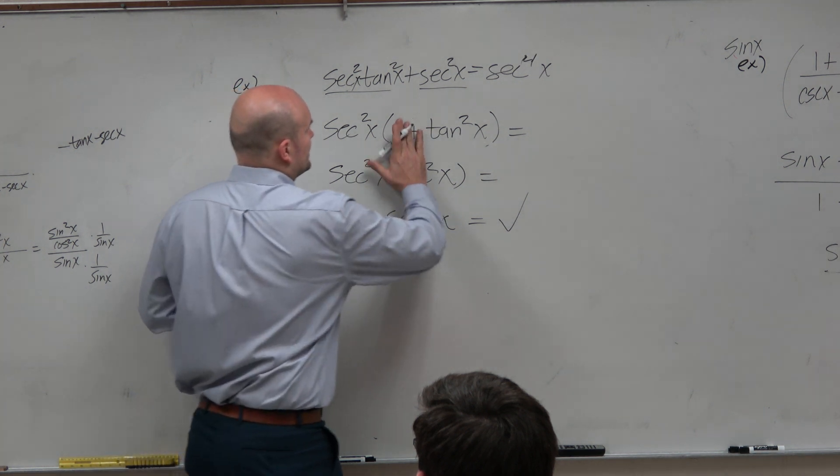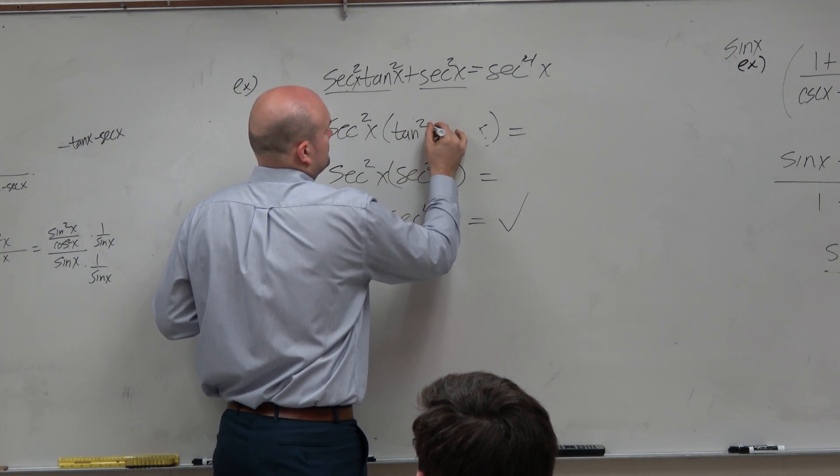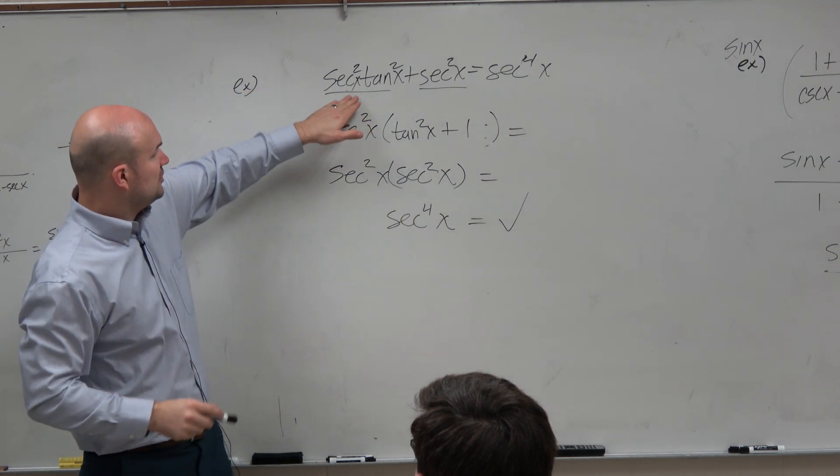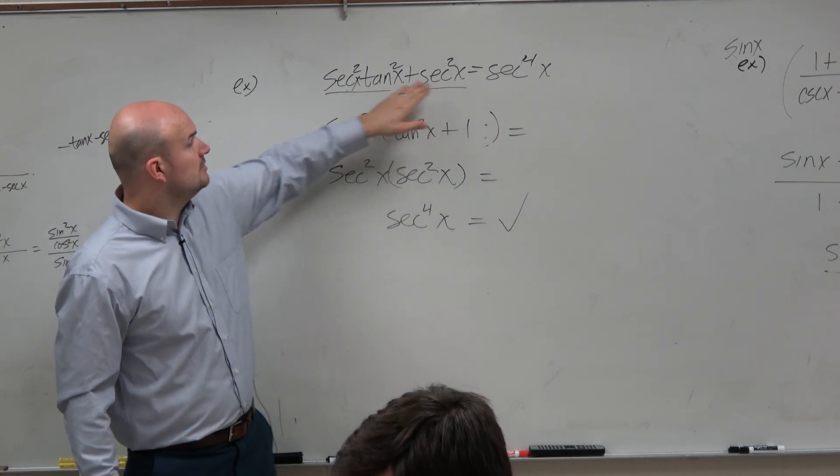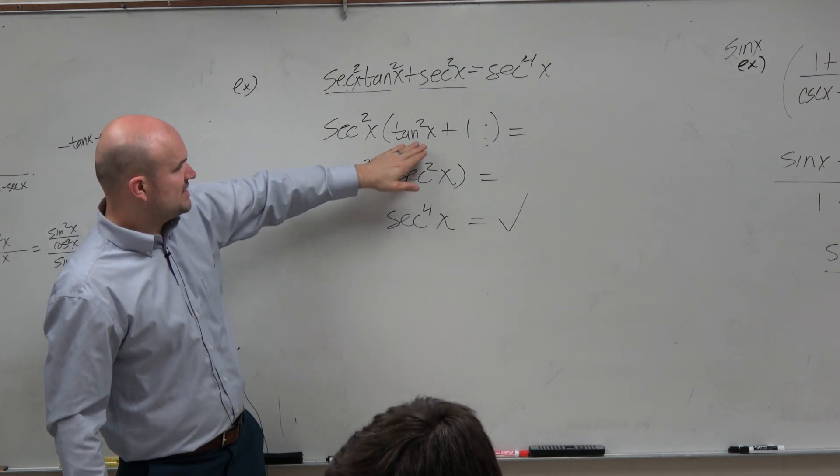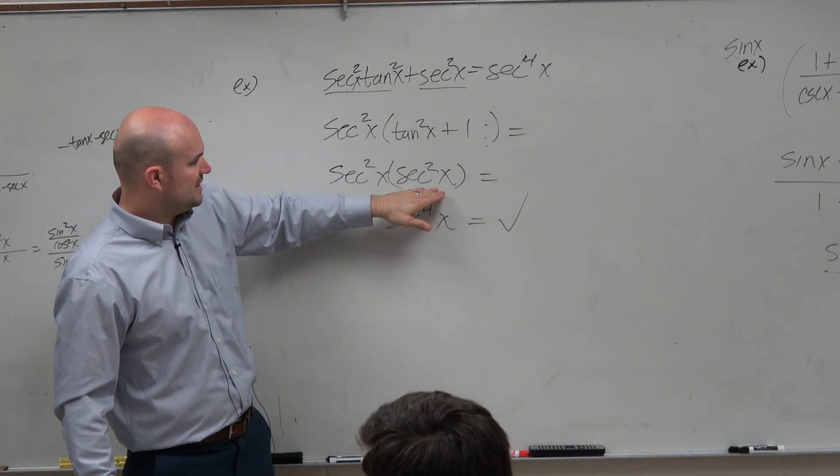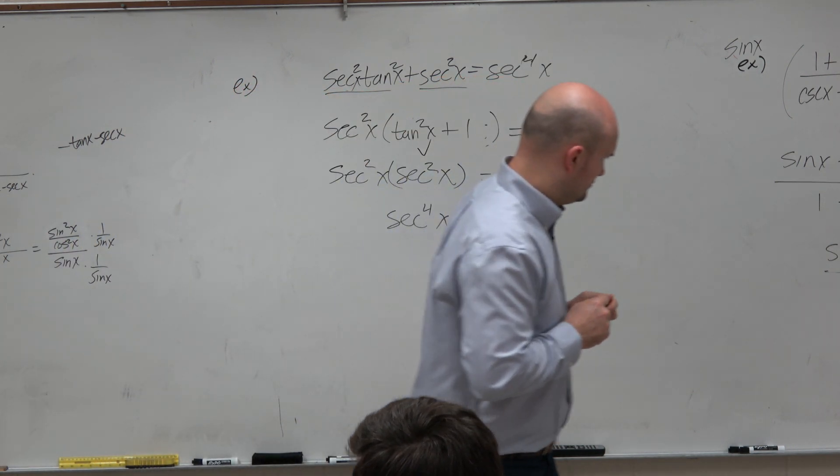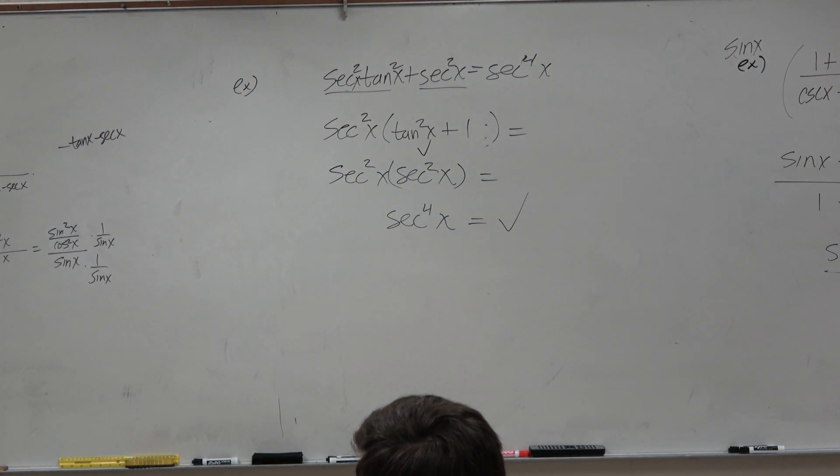It should have been written like this. They both share secant squared. So you factor it out. So you're left with tan squared of x plus 1. And then that equals secant.